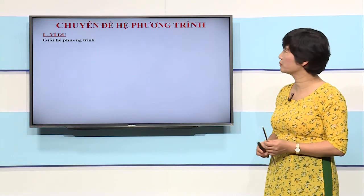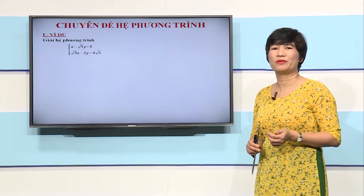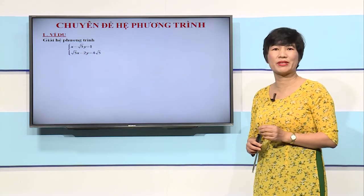Giải hệ phương trình: X trừ căn 5 nhân Y bằng 1; căn 5 nhân X trừ 2Y bằng 4 căn 5. Đầu tiên, chúng ta sẽ giải hệ phương trình này bằng phương pháp thế. Ở phương pháp thế, bước 1, chúng ta thường rút một ẩn theo ẩn kia, rồi thế vào phương trình còn lại để được phương trình một ẩn. Tuy nhiên, rút ẩn nào và từ phương trình nào thì chúng ta nên lựa chọn cách làm sao cho đơn giản nhất.